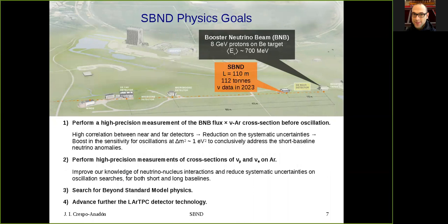The goals of SBND are four. First, performing a high-precision measurement of the booster neutrino beam flux combined with the neutrino-argon cross section before any oscillation happens. The high correlation between the near and far detectors grants us a reduction on the systematic uncertainties that boosts the sensitivity for oscillations at the delta m squared region of about one electron volt squared, in order to conclusively address the short-baseline neutrino anomalies. The second goal is performing high precision measurements of cross sections of muon neutrinos and electron neutrinos in argon. This will improve our knowledge of neutrino-nucleus interactions and reduce the systematic uncertainties on oscillation searches for both short and long baseline experiments such as DUNE. The third goal is using the neutrino beams at Fermilab to search for beyond standard model physics. And the fourth goal is advancing the liquid argon time projection chamber detector technology.